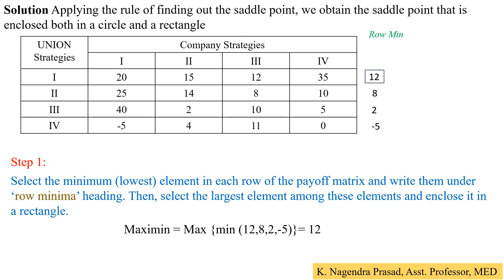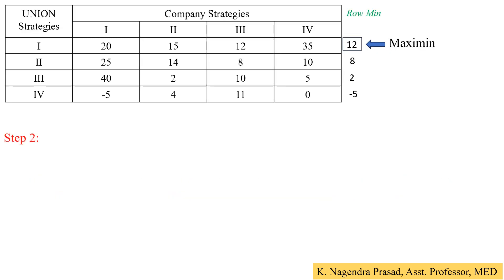The maximum value among the row minima is 12, so we enclose 12 in a rectangle. This completes Step 1, with 12 identified as the maximin value. We now move to Step 2.